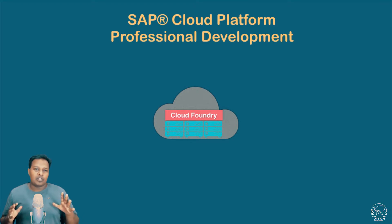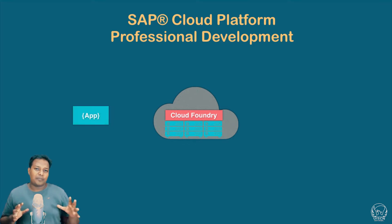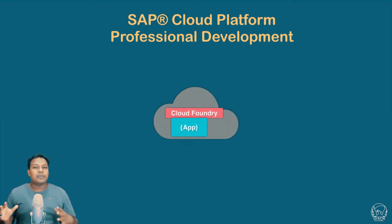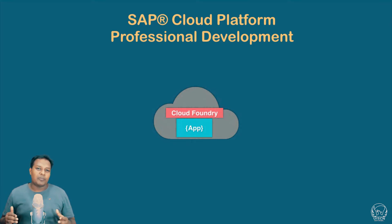First we will start with Cloud Foundry. We will try to understand the basics — what it is, how to work with it. And we will focus our attention on app development, trying to push applications to Cloud Foundry. What are the different scenarios we have? What are the parameters we can pass? How can we scale our application up or down? What are the different build packs it has to offer?